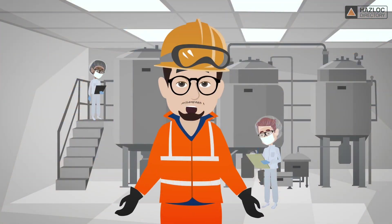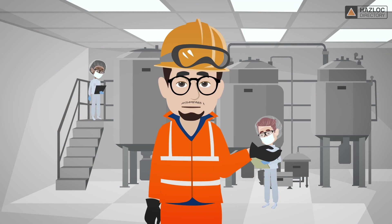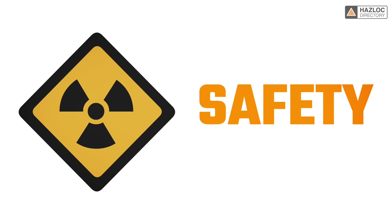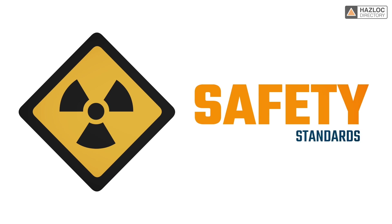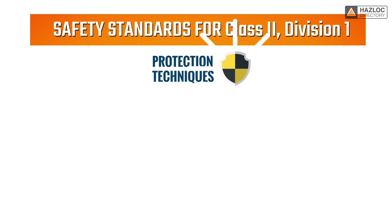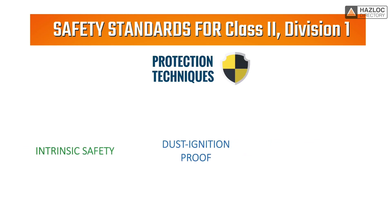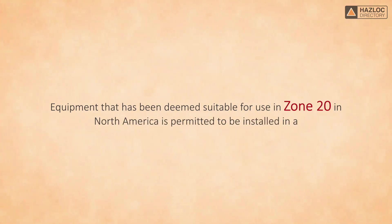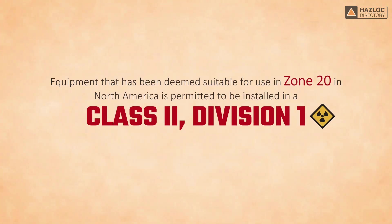Electrical equipment still needs to be installed in hazardous locations where there are explosive dusts present. This equipment must therefore be designed, constructed, and certified in compliance with the relevant safety standards. Class 2, division 1 products must be protected by one or more of the following three protection techniques: intrinsic safety, dust ignition proof, and purged and pressurized, type X or Y. Also, equipment that has been deemed suitable for use in Zone 20 in North America is permitted to be installed in a class 2, division 1 hazardous location.